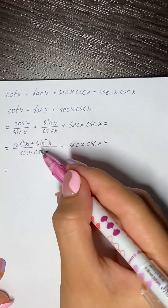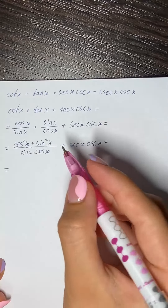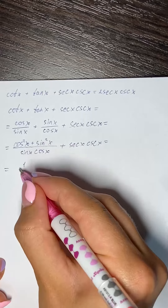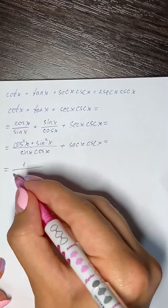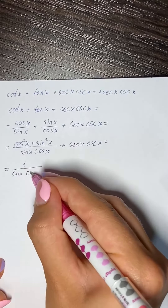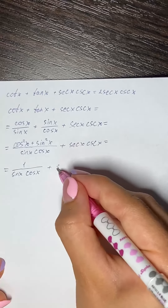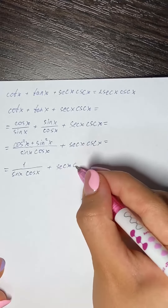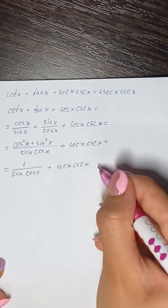We know that cosine squared of x plus sine squared of x is equal to 1. So we have 1 over sine of x times cosine of x, plus secant of x times cosecant of x.